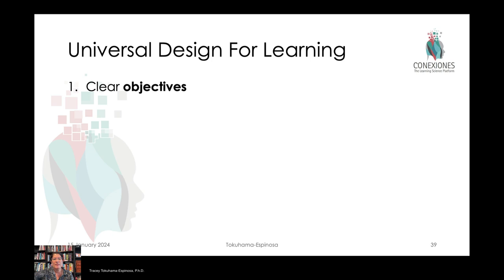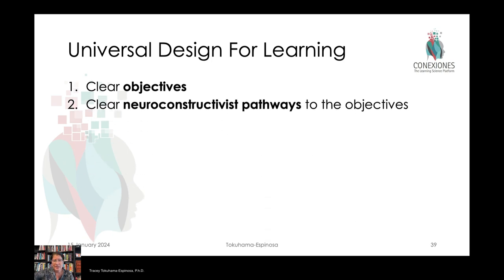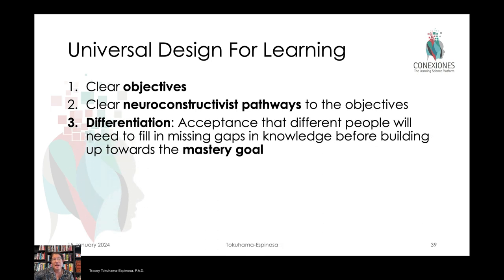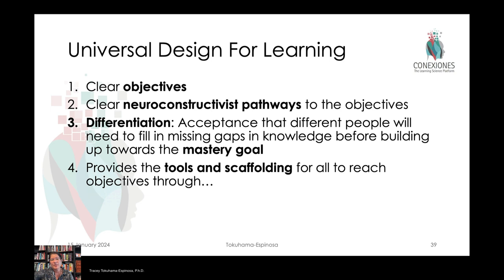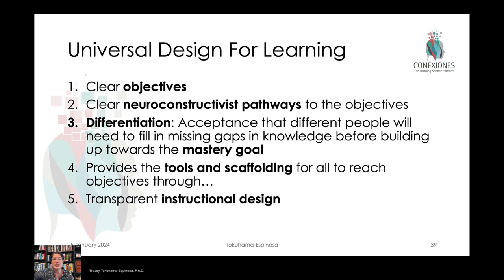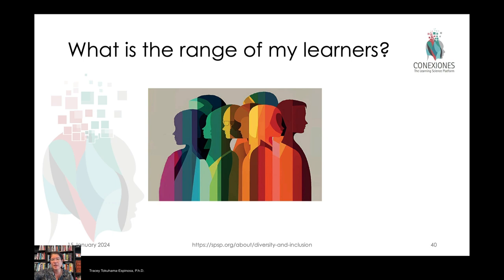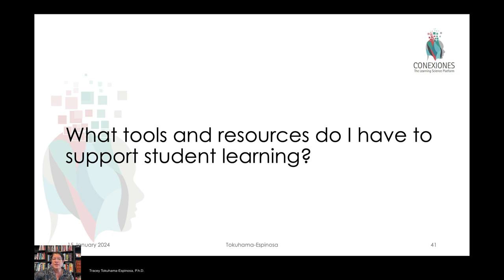Universal design for learning means that you have clear objectives. You use a neuroconstructivist pathway and trajectory for learning or curriculum to reach those objectives. You supply opportunities for differentiation so everybody can reach mastery goals. You use all your tools — tech tools as well — to scaffold that learning, and you have transparent instructional design so everybody knows where to find resources and can use what they need. The main two questions to ask are: what is the range of my learners, and what tools and resources are available to me?